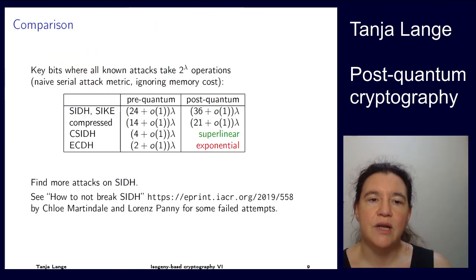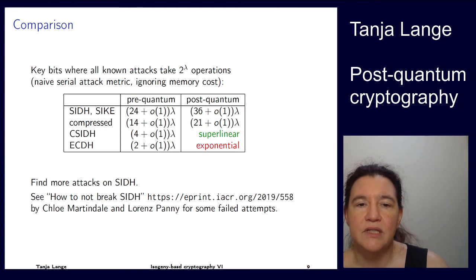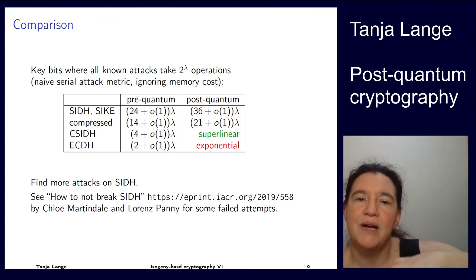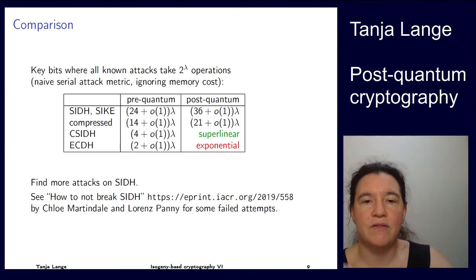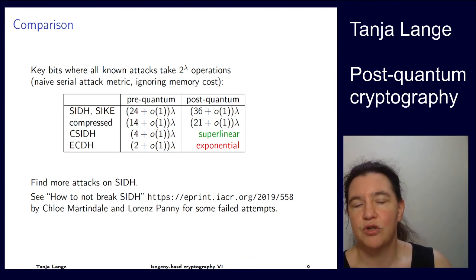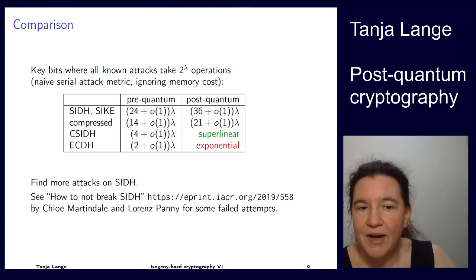For comparison, when you're looking at the normal elliptic curve discrete log, C-SIDH, and some versions of SIDH and SIKE, about the sizes, then of course the pre-quantum security is really nice for elliptic curve discrete log with Pollard's rho attack. For C-SIDH, we have a fourth root attack. And here we have a fourth root in p attack, but each key has an element over p squared, and we have these auxiliary points, so the keys get a lot larger. But for post-quantum security, they don't lose too much. And then the C-SIDH keys grow superlinear, and the ECDH keys grow through the roof exponential because we have Shor's attack.